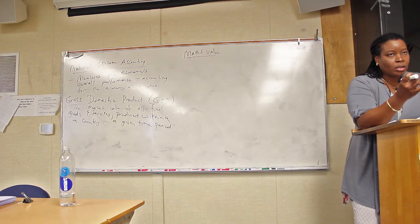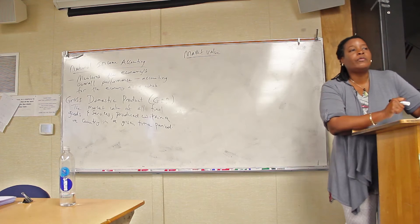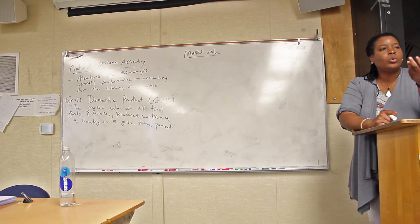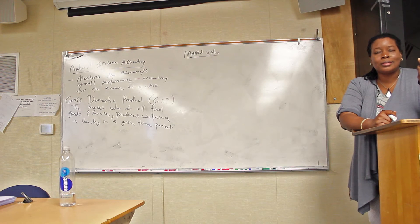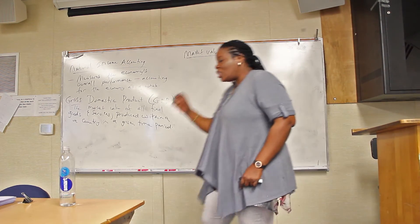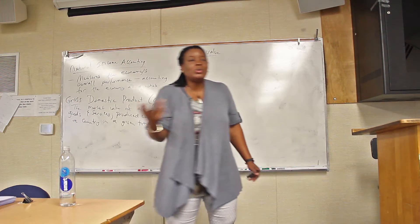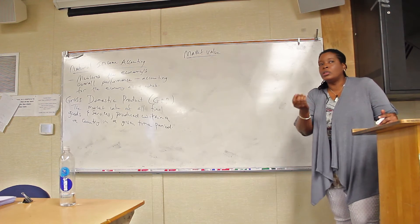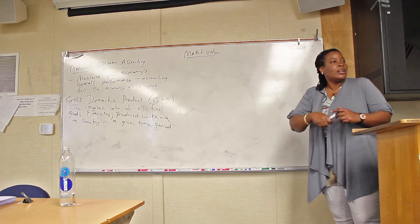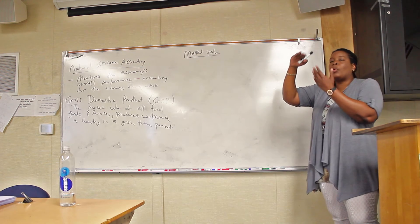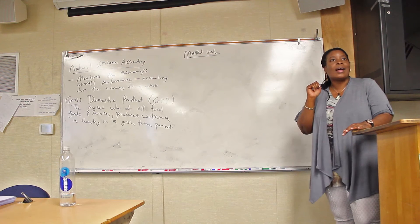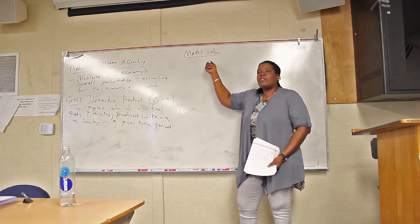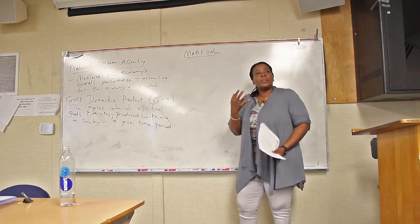For the GDP to make sense, to watch it over time, to use it for policy making, we have to have a unit of account. If somebody says the GDP is 20,000 bottled waters, 5,000 sneakers, and 200 of something else, that doesn't make sense. But if somebody says the GDP is close to 18 trillion dollars for the United States, that makes sense. That's what we mean by market value — we need a unit of account so we can watch the value of GDP from one period to the next, know if we're doing a good or bad job, and know if we're hitting a target.